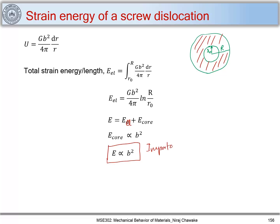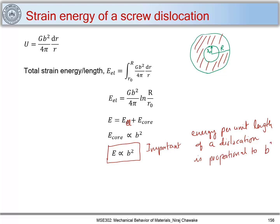This is a very important result: the energy per unit length of a dislocation is proportional to b². This result is essential for understanding how dislocations split up.